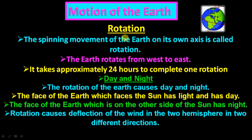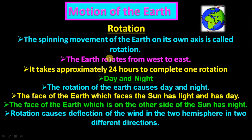The spinning movement of the earth on its own axis is called rotation. The earth starts rotating from one side and returns to the same place — this process is known as rotation. The earth rotates from west to east, and that is why the sun rises from the east.